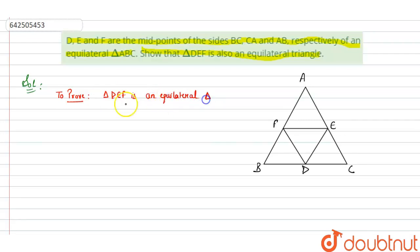This we have to prove, that means we have to prove DE equals EF equals DF. This we have to prove. Now let's start with the proof.